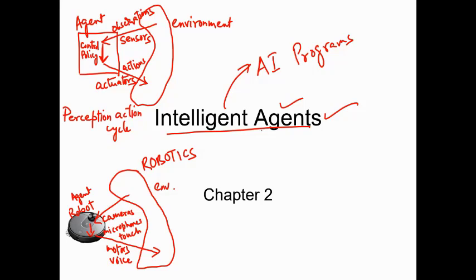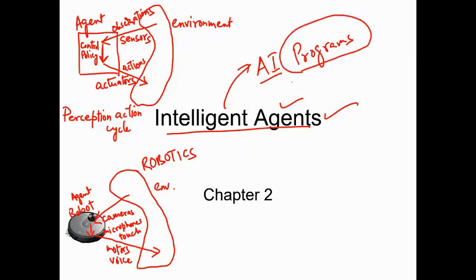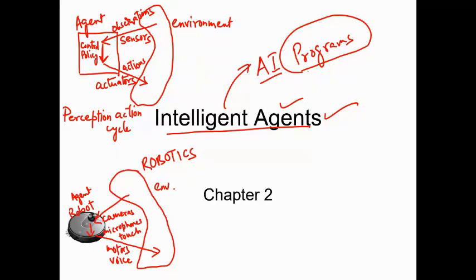So what really is an intelligent agent? You can think of it as an AI program — a software program, or maybe a hardware system, or even a human can also be an intelligent agent. I will show you all these things later.